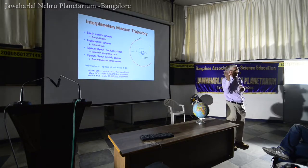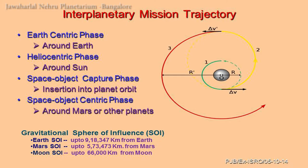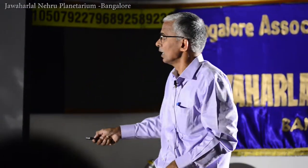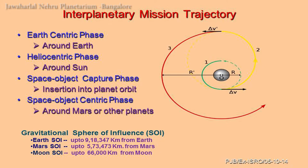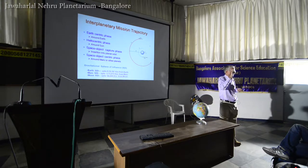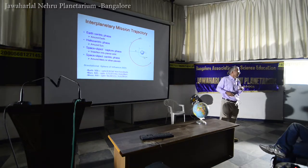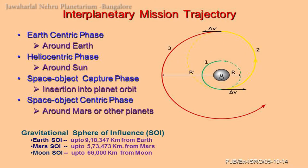Earth's gravitational sphere of influence extends to about 918,000 km. To leave Earth and travel to another planet, you must impart escape velocity. There are four phases: the Earth-centric phase (orbit around Earth), imparting escape velocity to enter the heliocentric phase, the heliocentric transfer phase (orbit around the Sun), and finally insertion into the target planet's orbit. Some rockets can impart escape velocity directly; others, like PSLV for Mangalyaan, first build up the orbit in Earth-centric phase and then impart escape velocity.